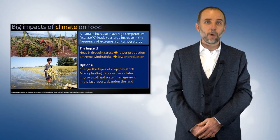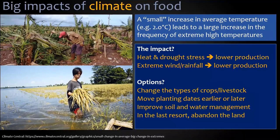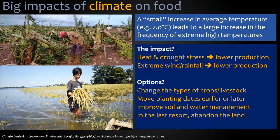The impact of this on farmers is immense. Heat and drought stress will lead to lower production, as will extreme wind and rainfall. Farmers have several options: they can change the type of crops or livestock to better cope with the new climate, adjust planting dates to avoid the worst extreme events, or improve their soil and water management. As a last resort, they may have to abandon the land if it's no longer economically feasible to produce there.